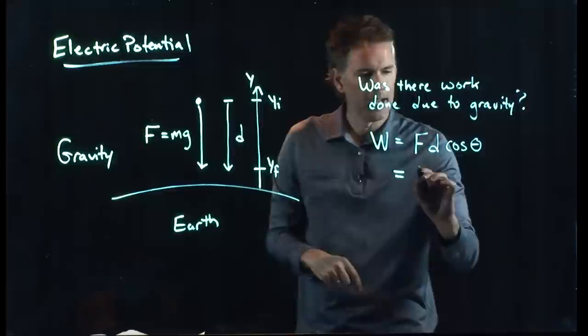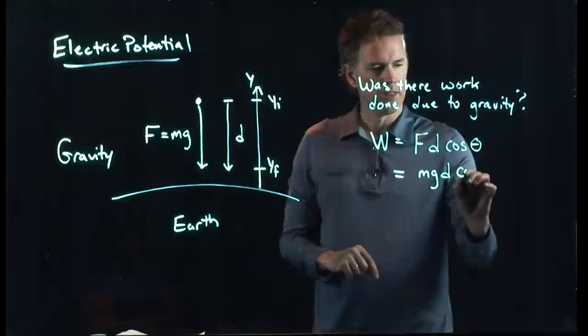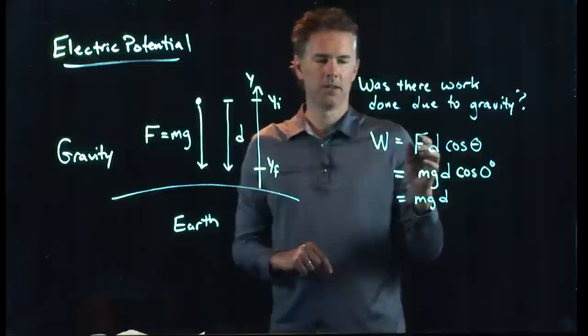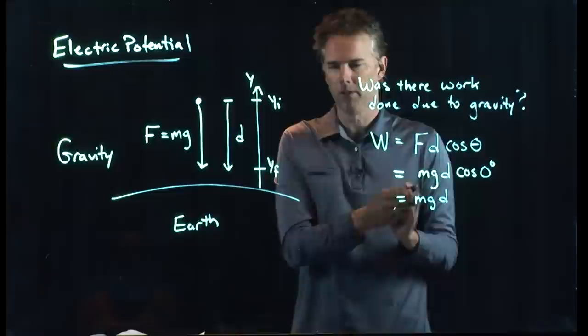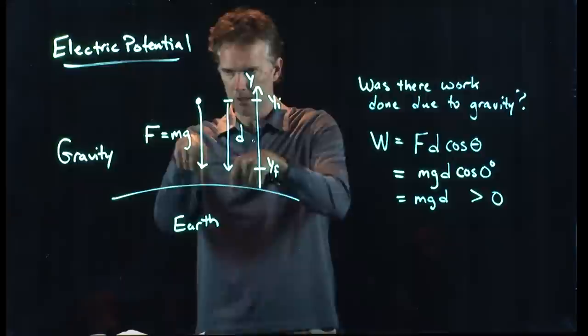F was down, the displacement D was also down, so we know exactly what this becomes. It becomes Mg for our force, D going down for the displacement, the angle between those is zero degrees, cosine of zero degrees is one, and so we get a work of M times G times D, where D is some positive number. This is the work that gravity did — it is a positive number because the force and the displacement are in the same direction.